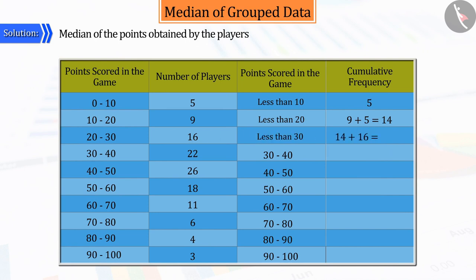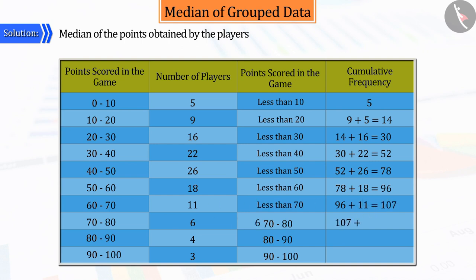Similarly, we will find the cumulative frequency of all other classes. From which we can find out the number of players who scored less than 10, 20, 30, 40 and 100.